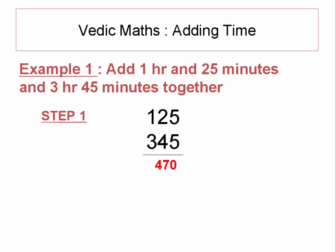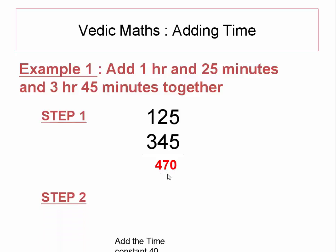Now you have to focus on one thing: if the last two digits cross 60, then you need to add a time constant. Otherwise, don't. Since here we have 470, the last two digits are 70, which crosses 60, so you need to add the time constant which is 40. The final output becomes 470 plus 40, which equals 510.